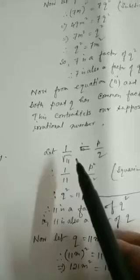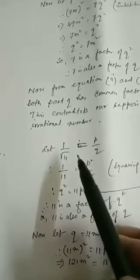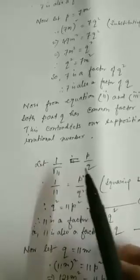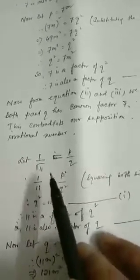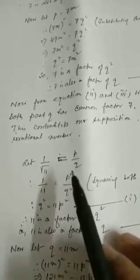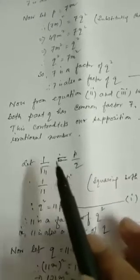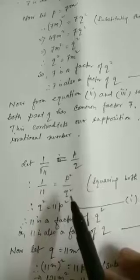Now let us take question number 4: prove that 1/√11 is an irrational number. Suppose 1/√11 is a rational number. Then 1/√11 = p/q. Squaring both sides: 1/11 = p²/q². Therefore q² = 11p². Suppose this is equation 1.